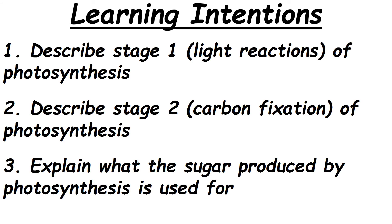We know the general equation, but it splits into two stages: Stage 1 is the light reactions, and Stage 2 is carbon fixation. You need to be able to describe the stages — you could do it as a flow chart using arrows. When sugar is produced, there are various things the plant can do with it, which you should also be able to outline.